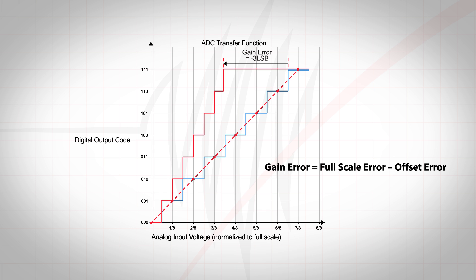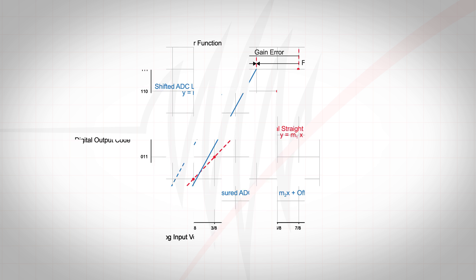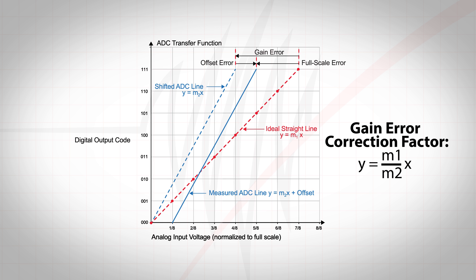Gain error is the full-scale error without offset error and is caused by a non-ideal slope of the transfer function. It is calibrated by multiplying the transfer function by the ratio of the ideal slope, M1, over the non-ideal slope, M2.